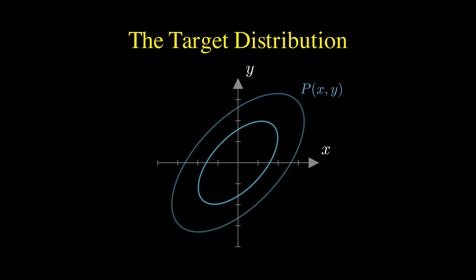Let's start by setting up our problem. Imagine we want to sample points from a two-dimensional normal distribution. It has a specific shape, a high-density region around the center, maybe tilted, due to correlation between our variables x and y.